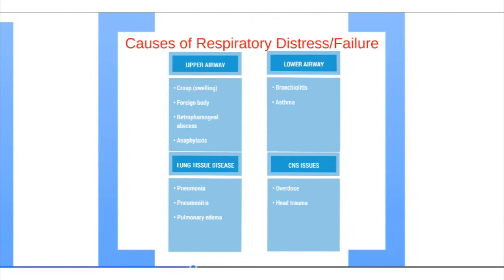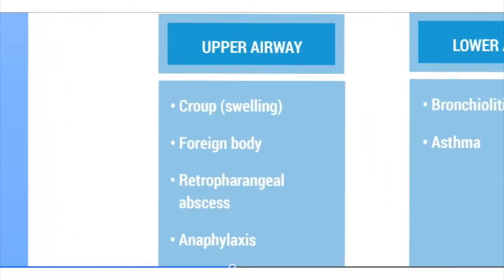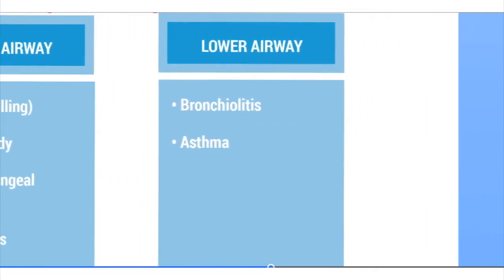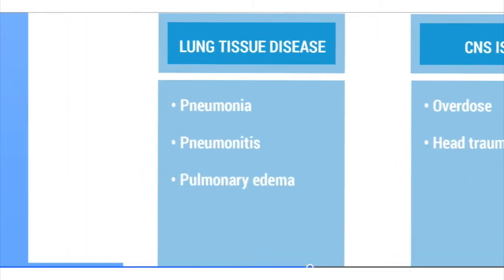Here are causes of respiratory distress. In the upper airway, distress can be caused by croup, foreign body, retropharyngeal abscess, or anaphylaxis. In the lower airway, it is caused by bronchiolitis or asthma. Lung tissue disease is caused by pneumonia, pneumonitis, or pulmonary edema.